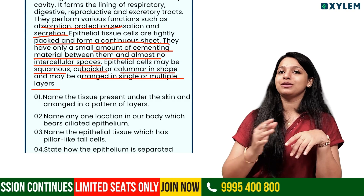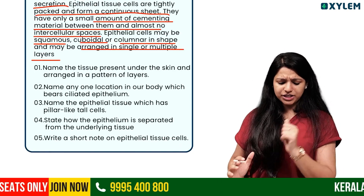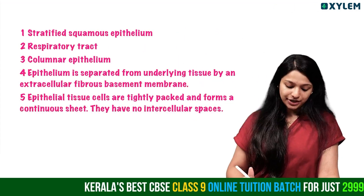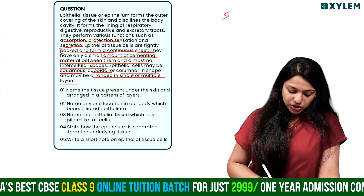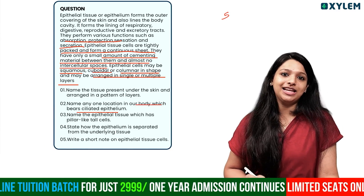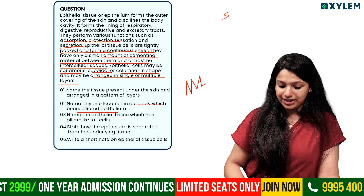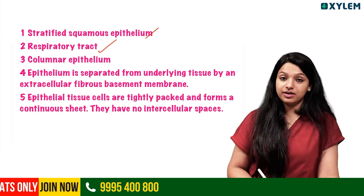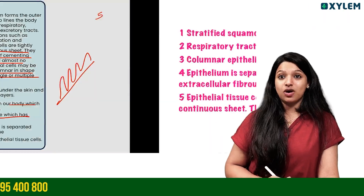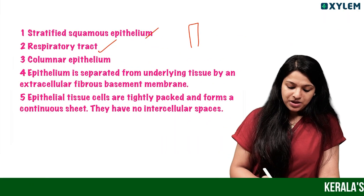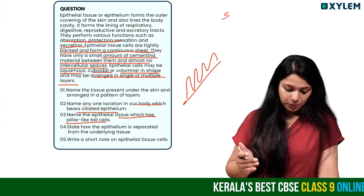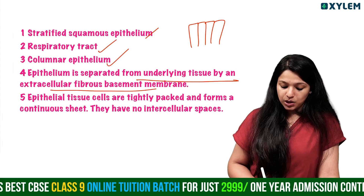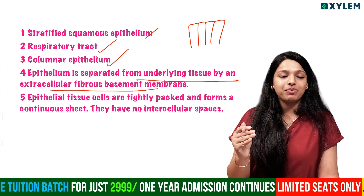Epithelial cells may be arranged in single or multiple layers. Tissue present under the skin forms stratified squamous epithelium. Columnar epithelial tissue lines surfaces involved in absorption and secretion. Epithelium is separated from the underlying tissue by an extracellular fibrous basement membrane.